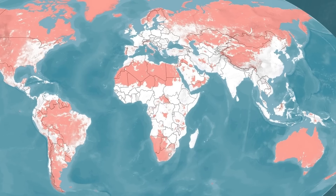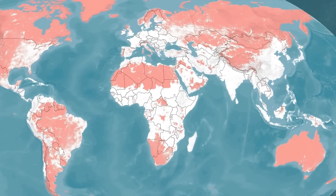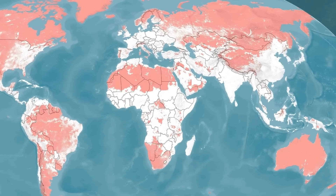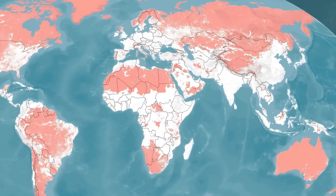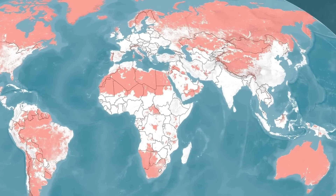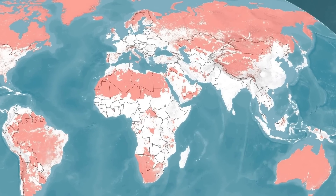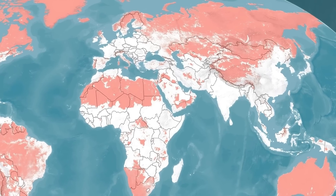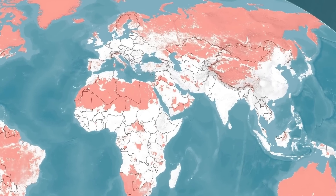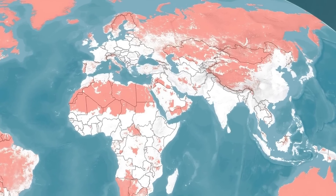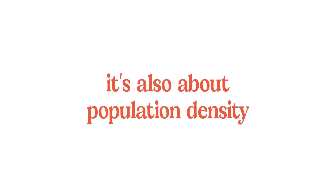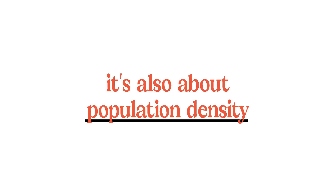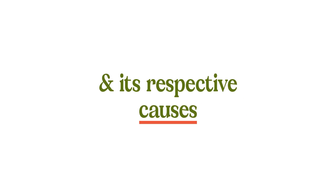But that doesn't explain everything. The first map also shows areas that aren't as noticeable, such as much of the interior of China, the interior of Portugal, or the Western USA. This other part of the problem is connected with population density, which itself has various causes.